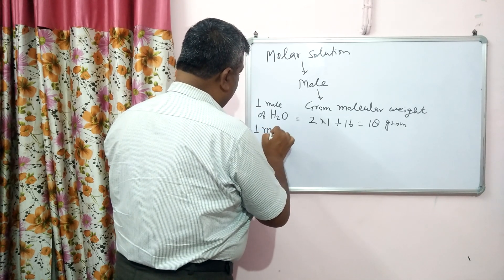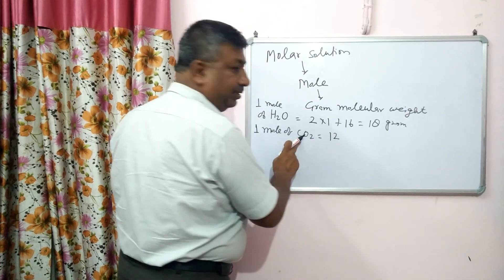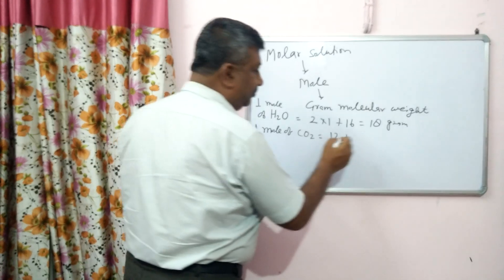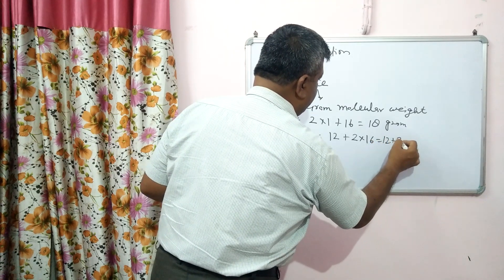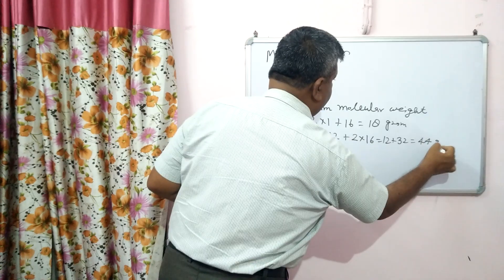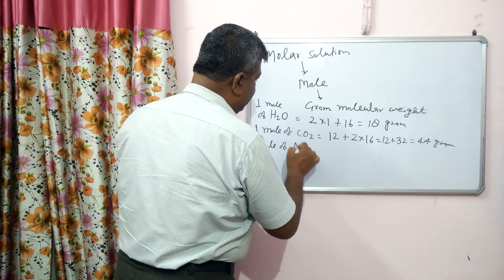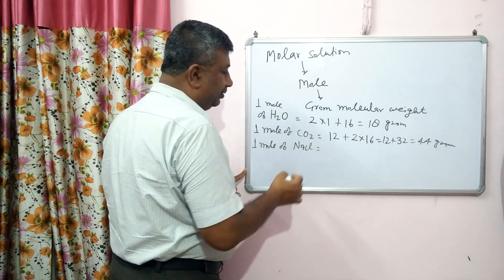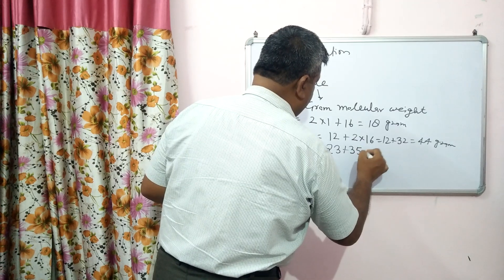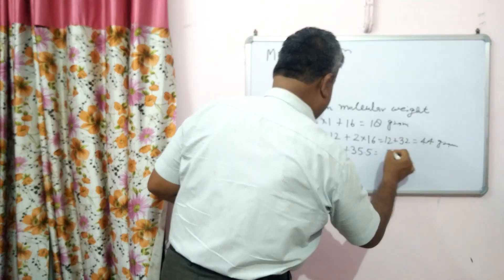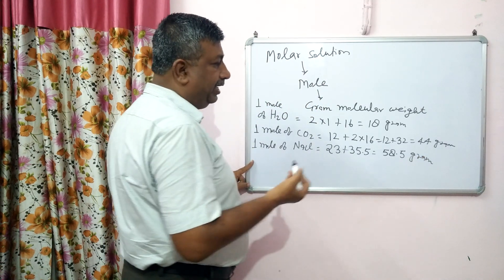Similarly, for 1 mole of CO2: the atomic weight of C is 12, plus there are 2 atoms of oxygen, that gives 44 grams. Similarly, for 1 mole of NaCl — it is a stable salt — the atomic weight of sodium is 23 and chlorine is 35.5, so it is 58.5 grams. Therefore, 1 mole of sodium chloride is 58.5 grams.